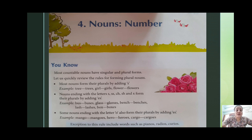کوئی کوئی nouns ایسے ہوتے ہیں جس کا plural form، singular form سے پورا completely change ہو جاتا ہے۔ For example, tree → trees, girl → girls, flower → flowers.